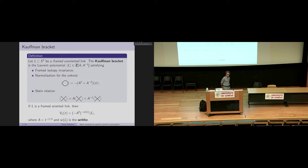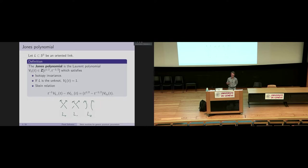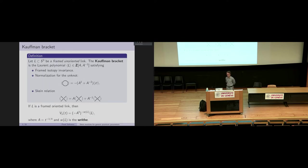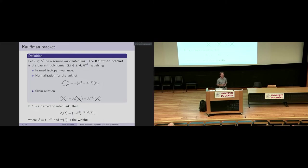There's a new variable usually denoted by A. It's again going to be a Laurent polynomial. As opposed to the Jones polynomial, the Kauffman bracket is defined for framed but unoriented links, while the Jones polynomial is for oriented but unframed links. It's again determined by normalization of the unknot and the skein relation, except the skein relation is a little bit easier — on one side you have a single crossing, on the other side you have no crossings. The Jones polynomial and Kauffman bracket are related by some rescaling.